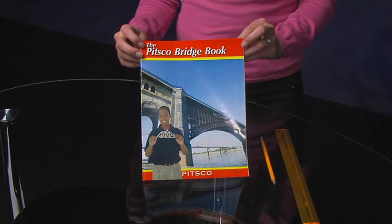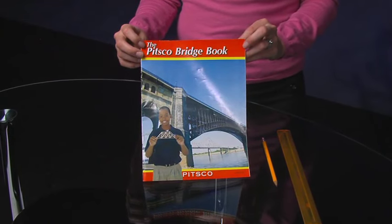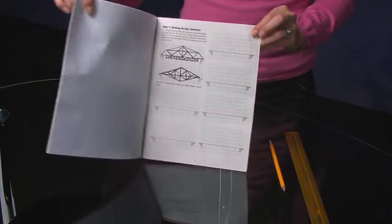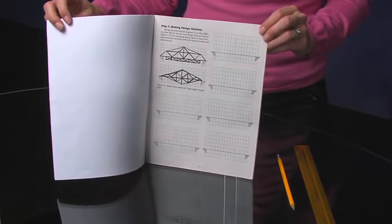We recommend that you refer to the PITSCO Bridge Book for some truss ideas and design samples. There is also space in the book for you to sketch your ideas. It's a good idea to complete some sketches with superstructures and some with both superstructures and substructures.